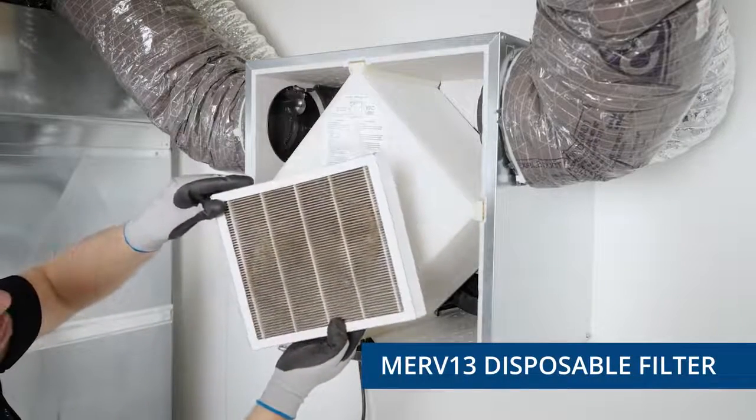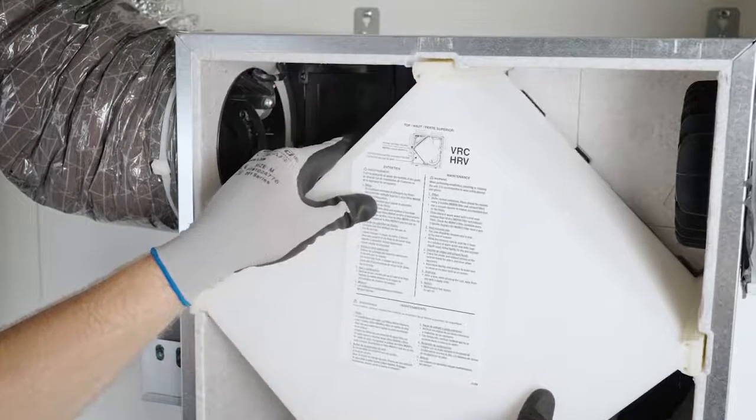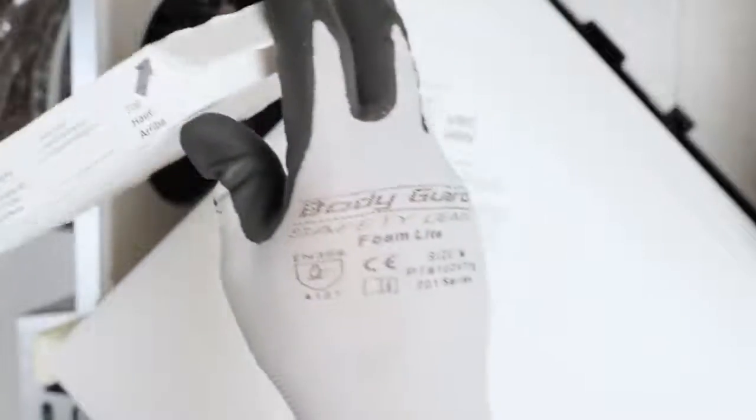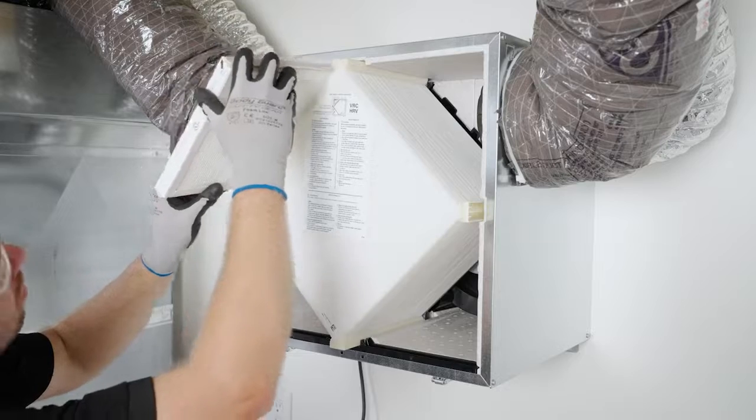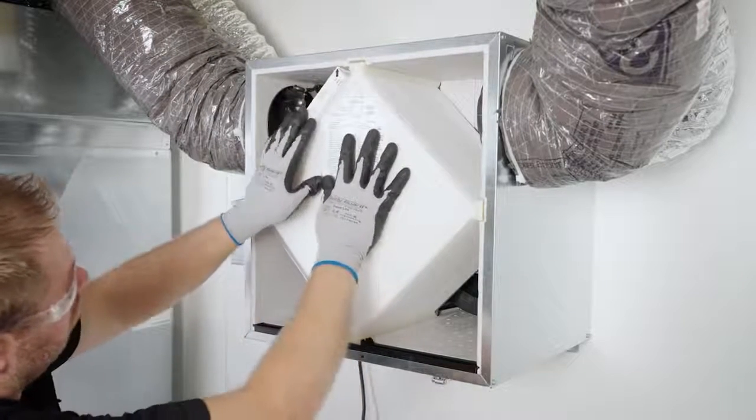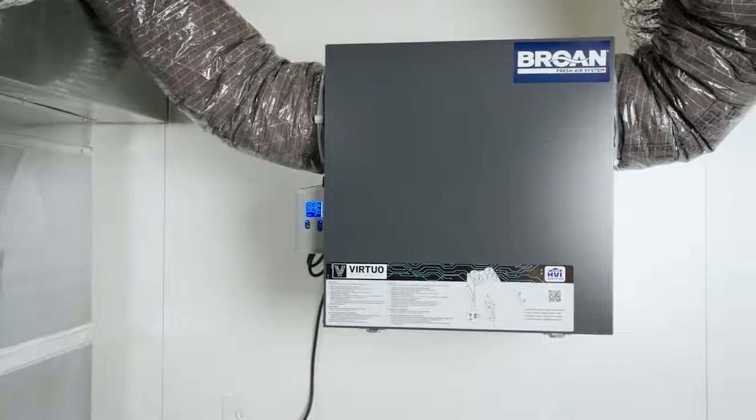To insert a MERV 13 filter, pull the recovery core three inches to four inches out. Then bend the two MERV flaps to form a 45-degree angle. Install the MERV 13 filter over the recovery core. Push the recovery core and the MERV 13 filter to the bottom of the unit. This completes the maintenance on your Browne AI Series unit.